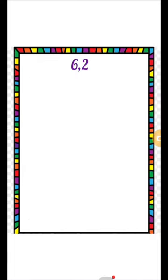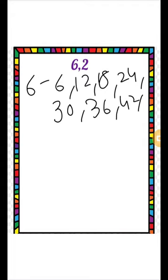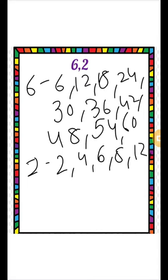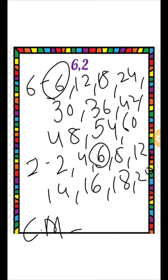See the next question: find the LCM of 6 and 2. First write the multiples of 6: 6, 12, 18, 24, 30, 36, 42, 48, 54, 60. Now write the multiples of 2: 2, 4, 6, 8, 12, 14, 16, 18, 20. Find the common multiples: 6, 12, and 18.